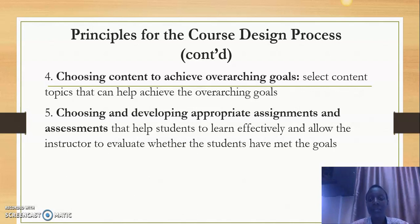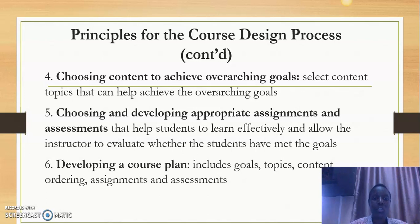Number five is choosing and developing appropriate assignments and assessments that help students learn effectively and allow the instructor to evaluate whether students have met the goals. These assignments and assessments could be both formative and summative, and they should be integrated in the course design process. Lastly, develop a course plan that covers all five aspects: the goals, the topics, the ordering of the content, the assignments, and the assessments students should complete to achieve the course learning outcomes.